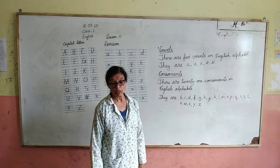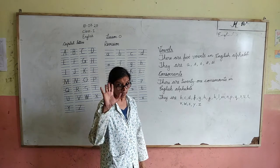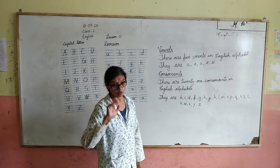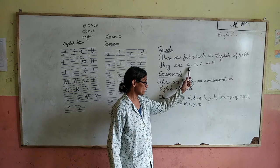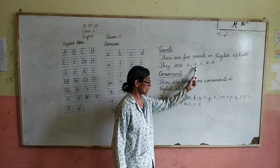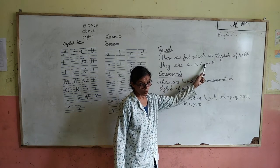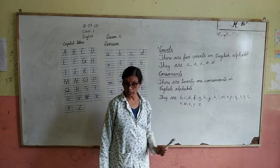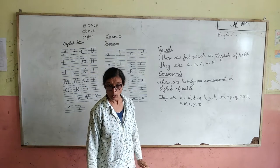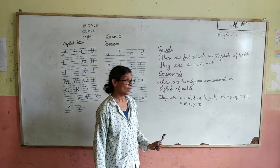How many vowels are there? There are five vowels in the English alphabet. They are A, E, I, O, U. We already learned it. Okay, you remember?